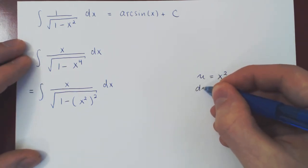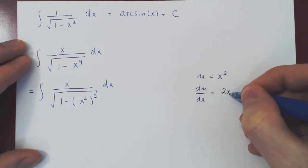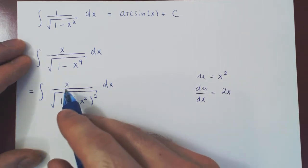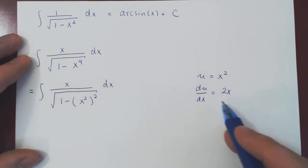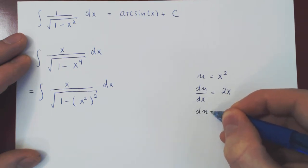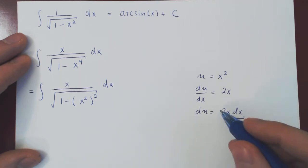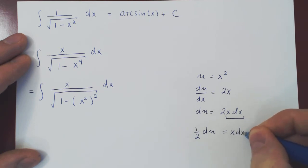u is a function of x. Differentiate u with respect to x gives you 2x. If you look on top, we have x dx, so let's isolate x dx. Let's multiply both sides by dx, and so du is 2x dx. We want to isolate x dx and not 2x dx. So divide by 2, or multiply by 1 half, and you have 1 half du is x dx.